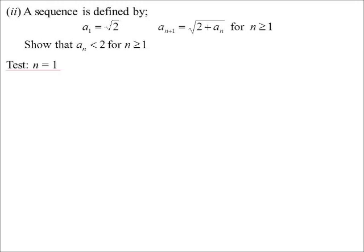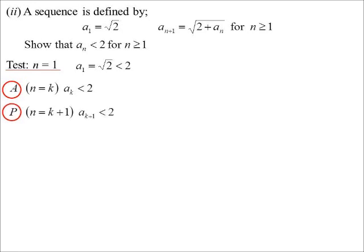So let's prove it for the first one. So a1 is the square root of 2, and sure enough, the square root of 2 is less than 2. So we're fine for the first term. So my assumption is going to be that term k is less than 2. I want to prove term k plus 1 is less than 2.